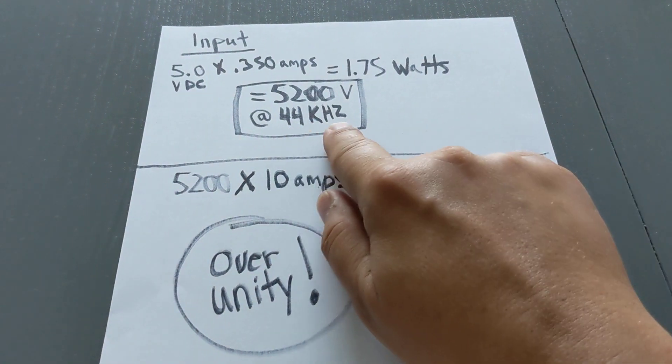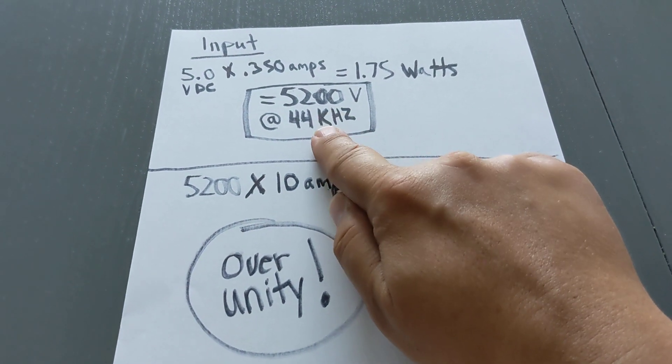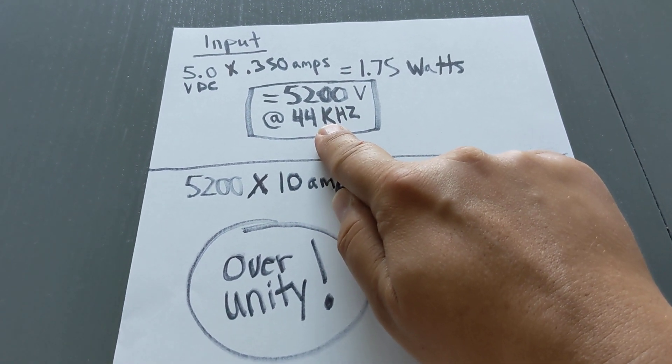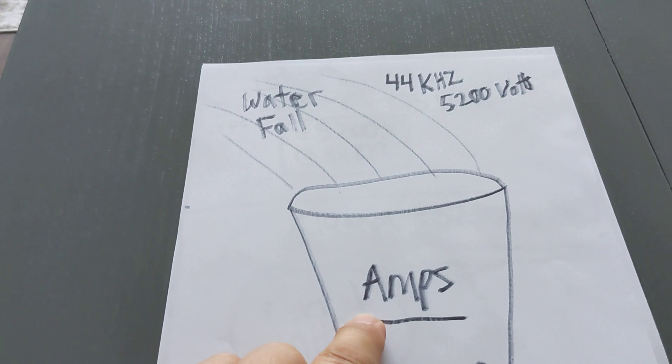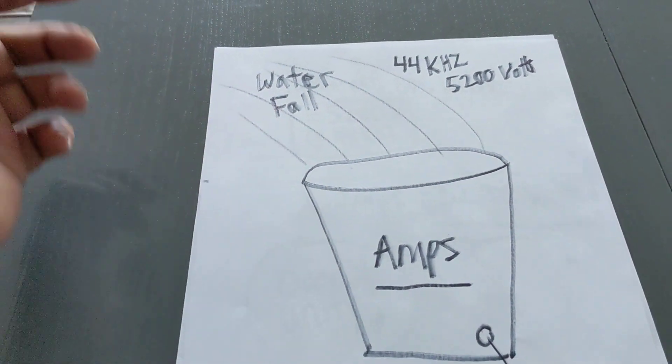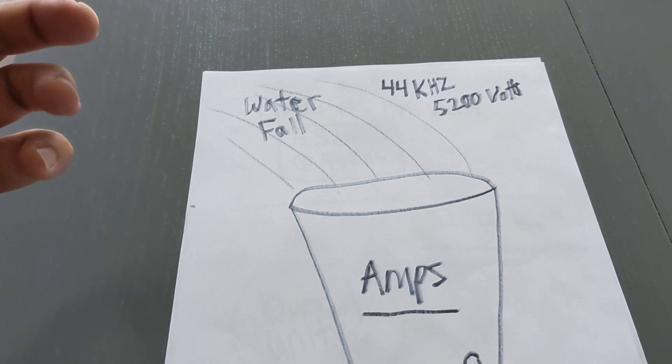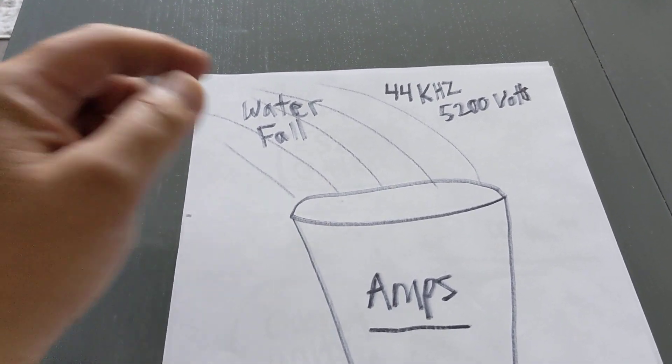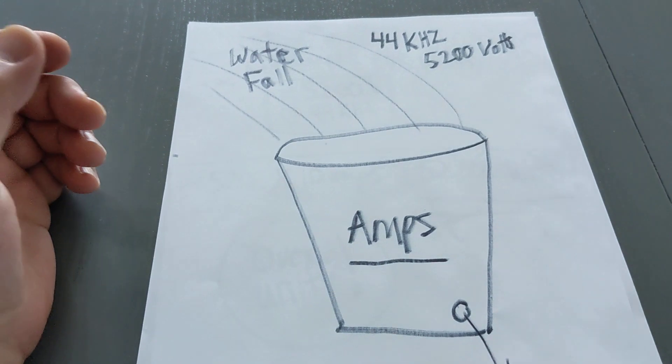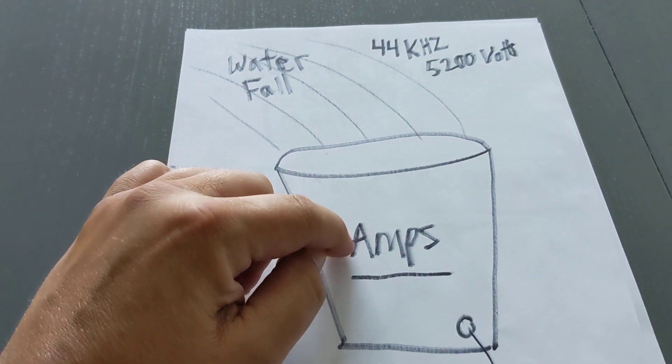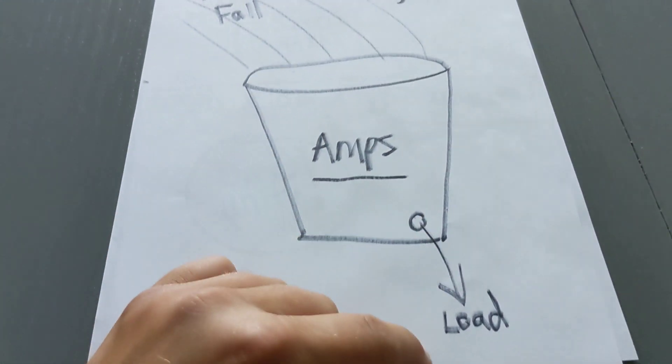So just to kind of make things understandable what I'm getting at, the kilohertz is a very key component to making this over unity. And here's how. We have a bucket of water. We have a waterfall. That waterfall is the amount of voltage going into the capacitor. So the bucket is the capacitor, which will be able to create the amps that we need for our load.